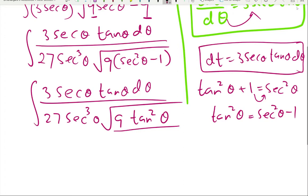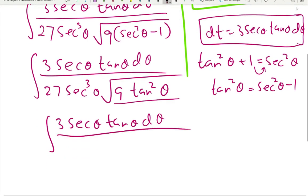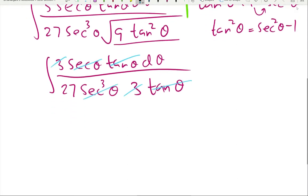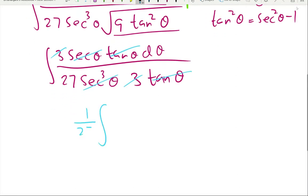Taking the square root: √9 = 3 and √(tan²θ) = tan(θ). So we have 3·sec(θ)·tan(θ) in the numerator over 27·sec³(θ). Simplifying: tan/tan cancels, 3/3 cancels, and one sec cancels, leaving 1/27 · (1/sec²θ) dθ.